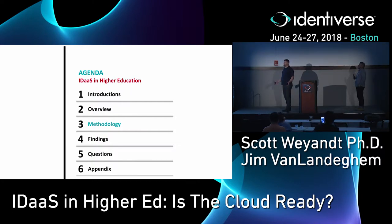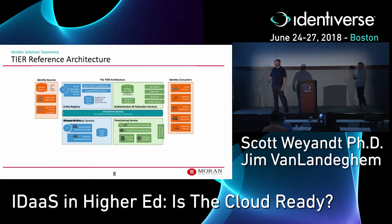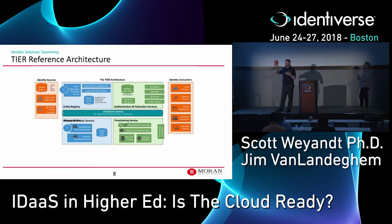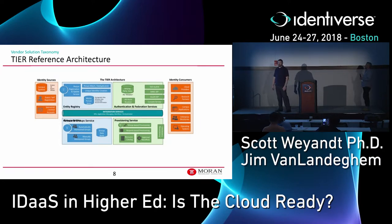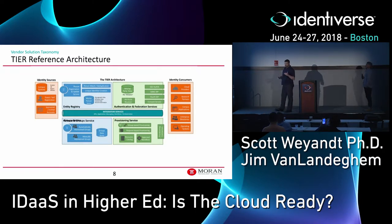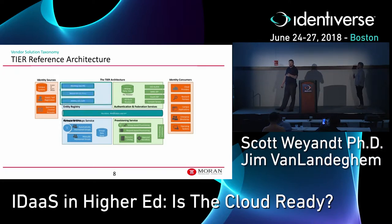What you see here — many of you involved in identity and access management have probably seen before — this is the TIER reference architecture from Internet2. We wanted to break down what kind of functionality these vendors have and how that relates to higher education using the de facto higher education TIER reference model. We overlaid this with a few boxes to describe each quadrant of this architecture — such as entity registration.